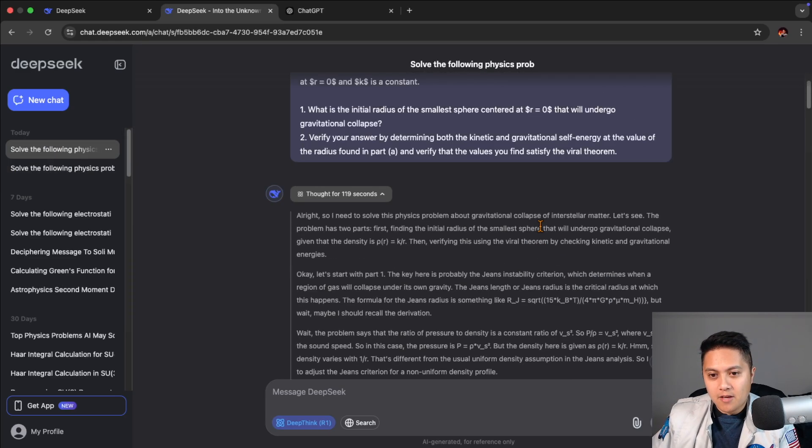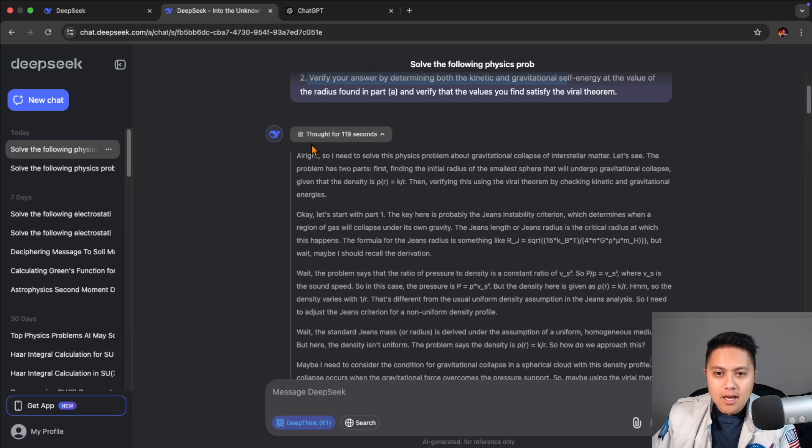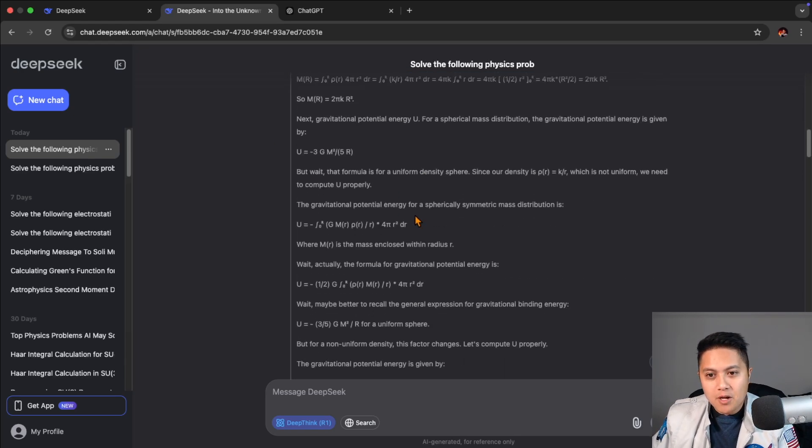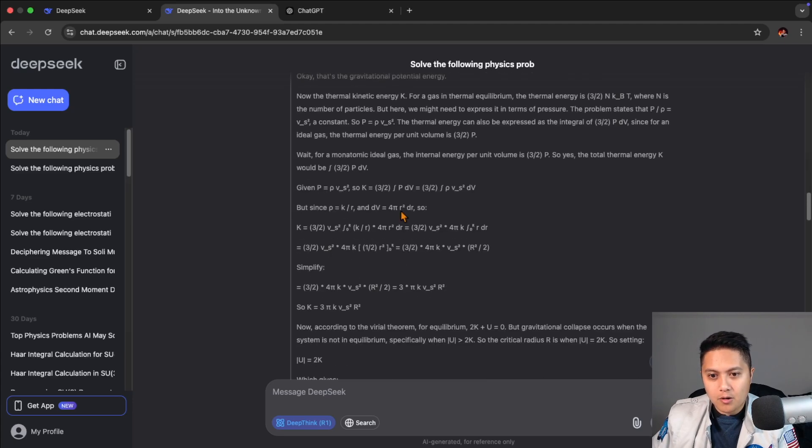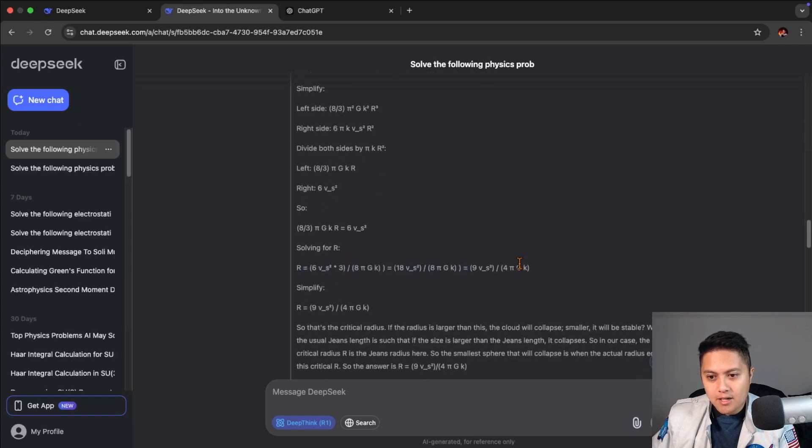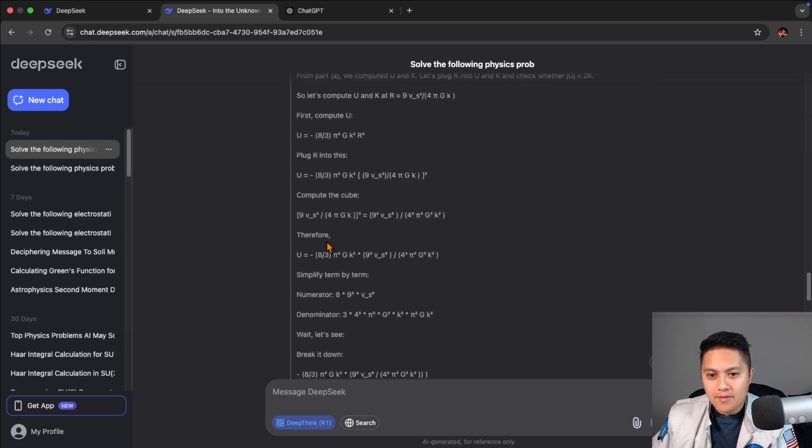When I gave it the bonus question, so I pretty much just gave it the same question again, but with the bonus down here, it thought for about two minutes this time. And it goes through virtually the same logic again, not exactly the same tokens, but the logic is still the same for part one. And so it gets the final answer again of this expression.